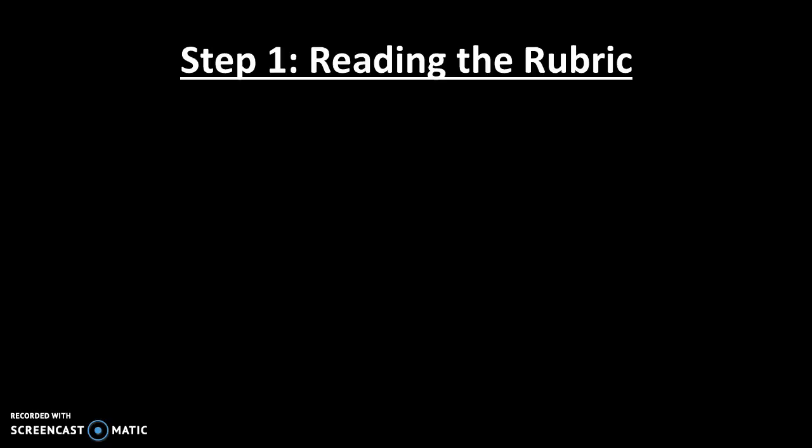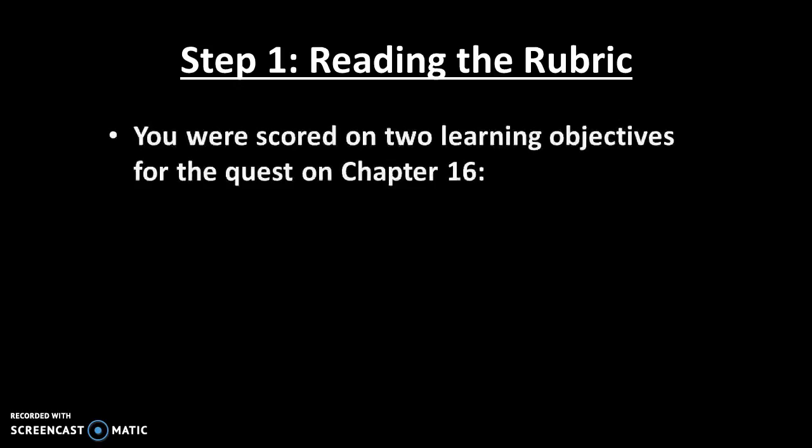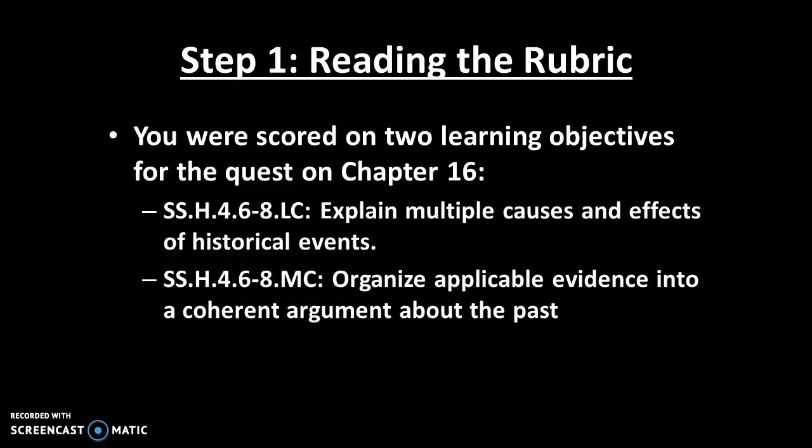So let's jump right in. The first step I wanted to go through with you is just looking at the rubric on which you were graded, because if you understand the rubric and what we're looking for in this assignment, it will make it a lot easier for you to meet all of the requirements. There were two learning objectives that we scored you on for the quest for chapter 16. The first was to explain multiple causes and effects of historical events. The second was to organize applicable evidence into a coherent argument about the past.